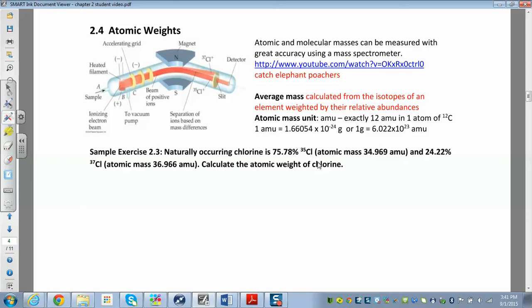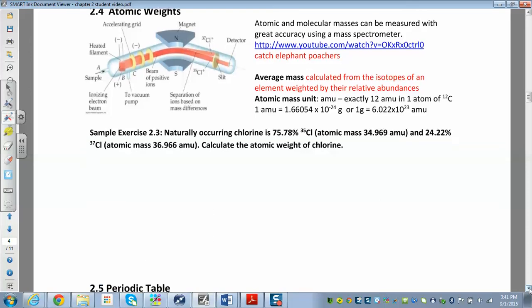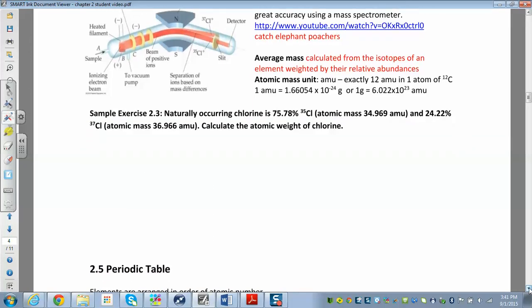All right, so how do we calculate all this stuff? How do we find our average mass? And these problems are nice because you can always check your answer. You should get whatever's in the periodic table as your average mass. So how do we figure that out?